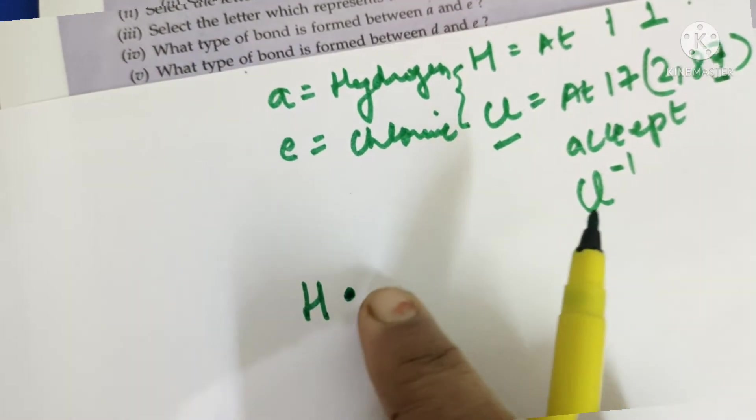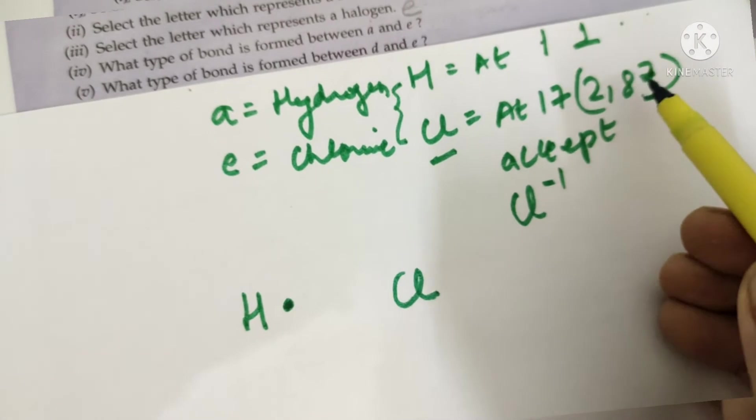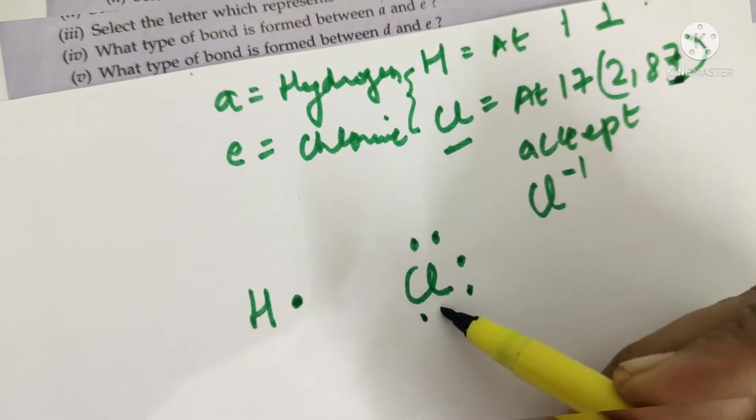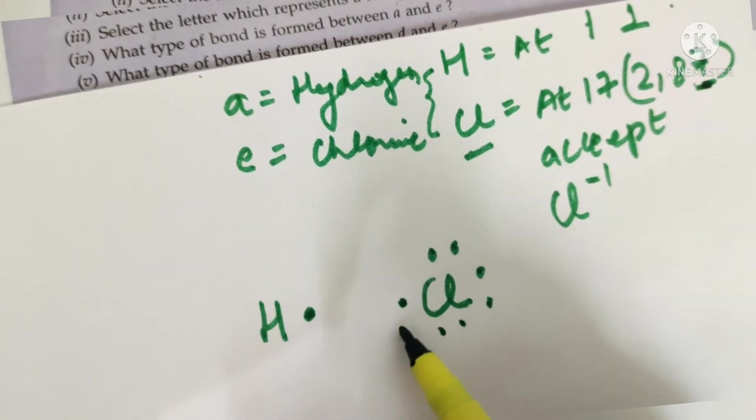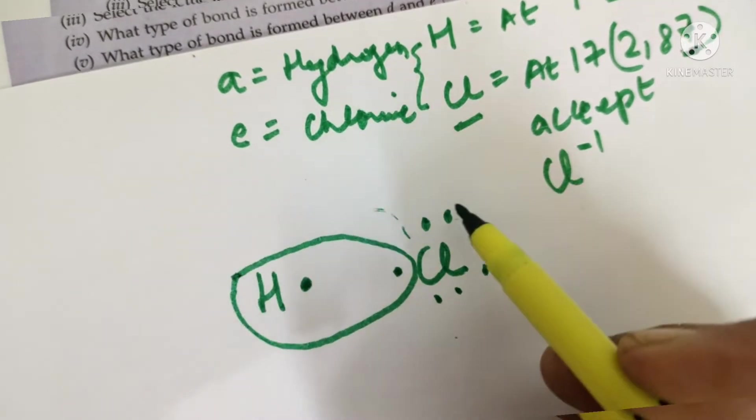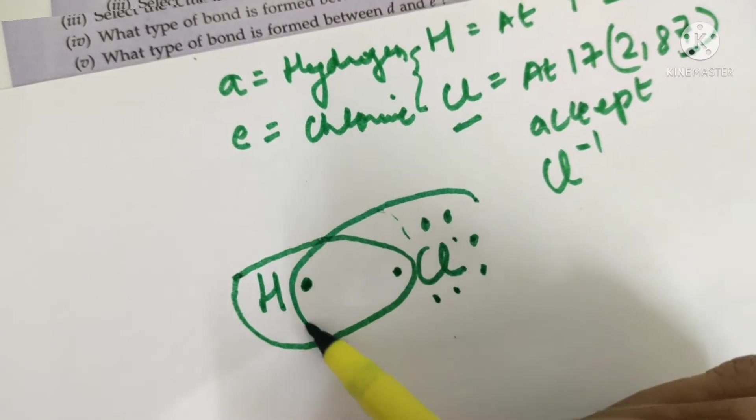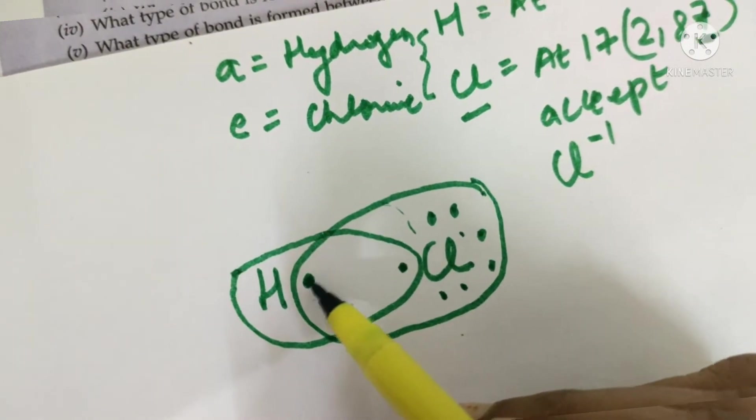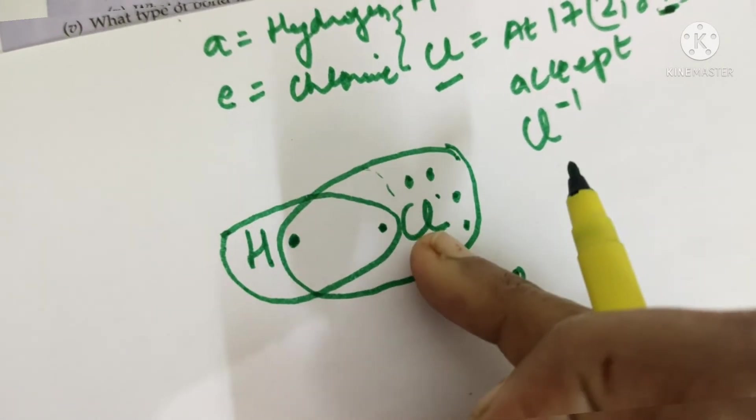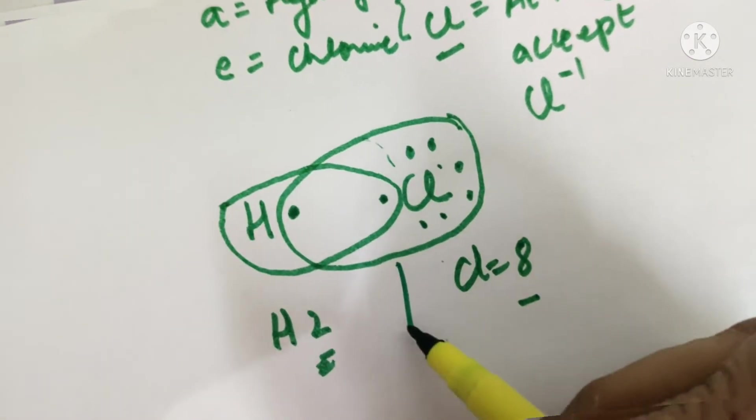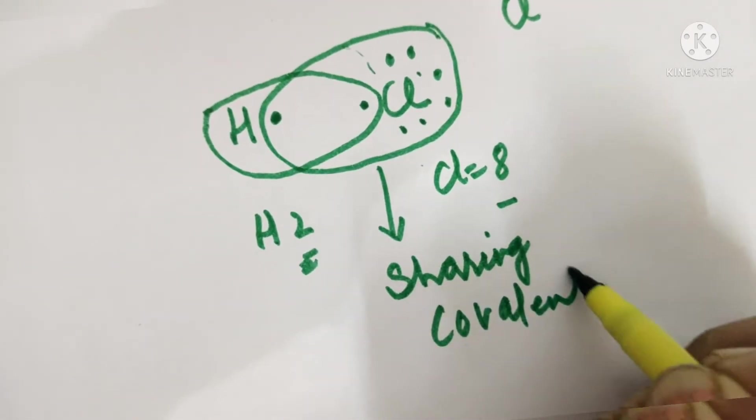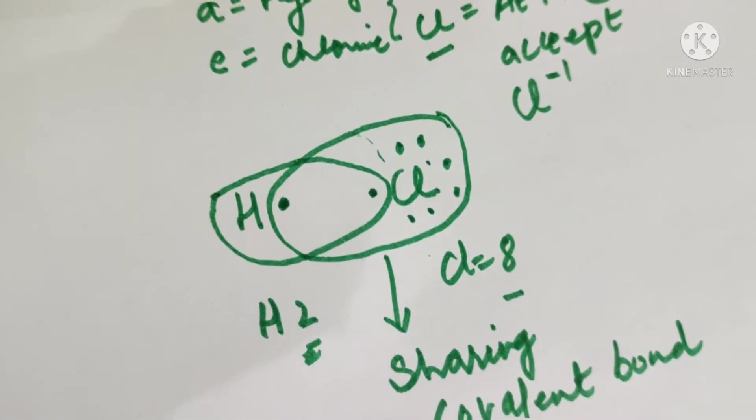H is having, let's write down only the valence electron, 1. And Cl is having how many? Only we are writing the valence electron: 1, 2, 3, 4, 5, 6 and 7. So, chlorine needs 1 to complete its octet and this also needs 1 to complete its shell. So what will it do? It will give, no it will not take. It will share. Now, chlorine has shared 1 electron with hydrogen and hydrogen is also sharing. So, chlorine is also having 8 electrons in the last shell and hydrogen has also got 2 electrons. So, this type of bond which is formed by sharing is called covalent bond.